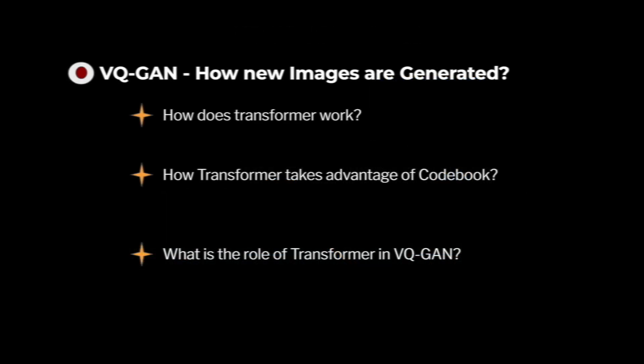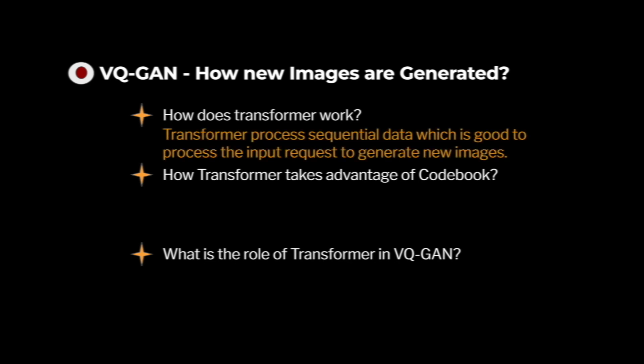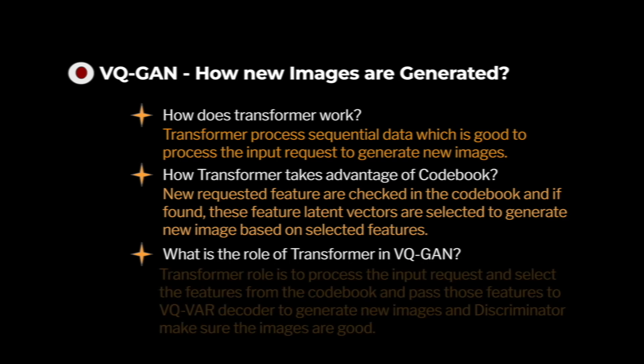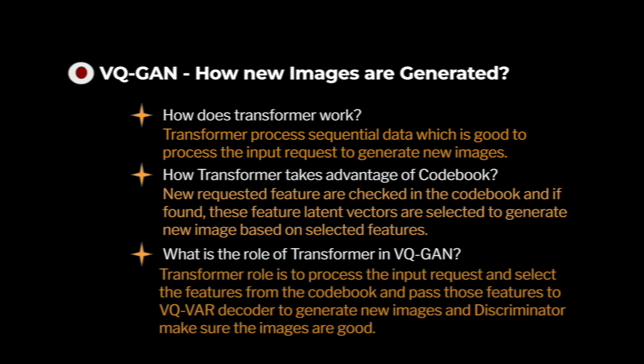Now we can answer the three transformer questions. First: how does the transformer work? The transformer processes sequential data, making it well-suited to process input text requests for generating new images. Second: how does the transformer take advantage of the codebook? The requested features are looked up in the codebook and, if found, their latent vectors are selected to generate a new image. Third: what is the role of the transformer in VQGAN? The transformer processes the input request, selects features from the codebook, and passes them to the VQ-VAE decoder to generate new images, while the discriminator ensures quality.